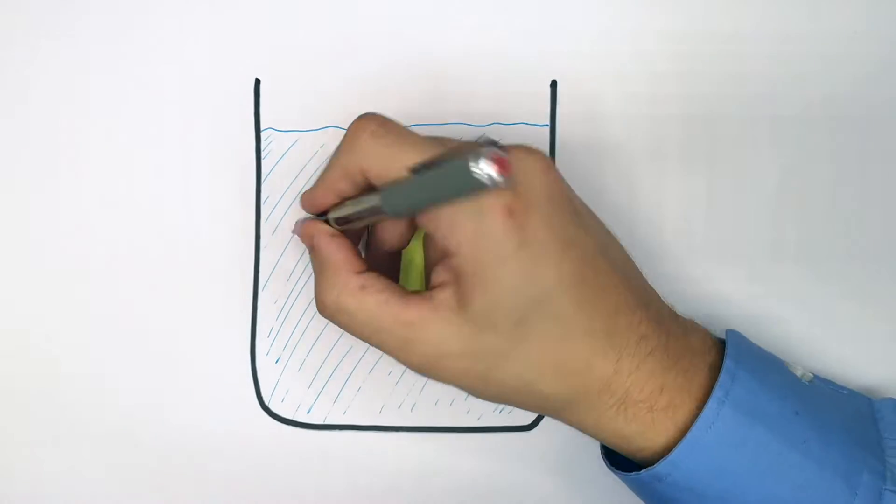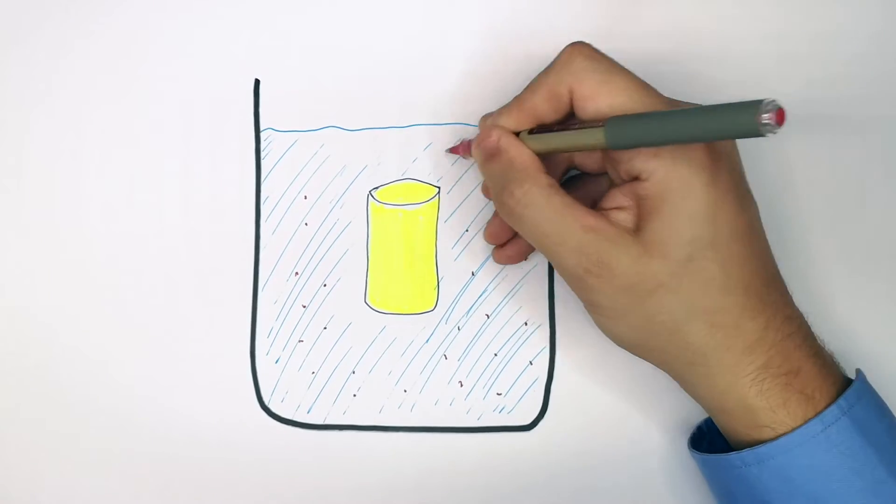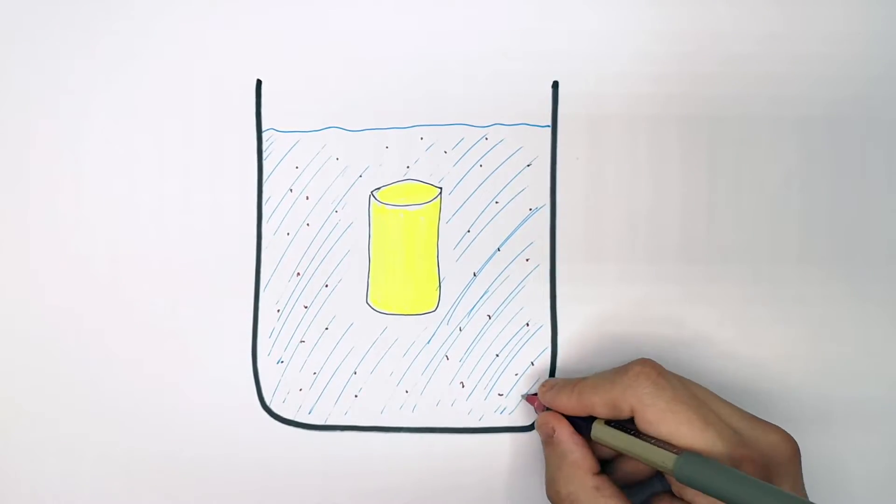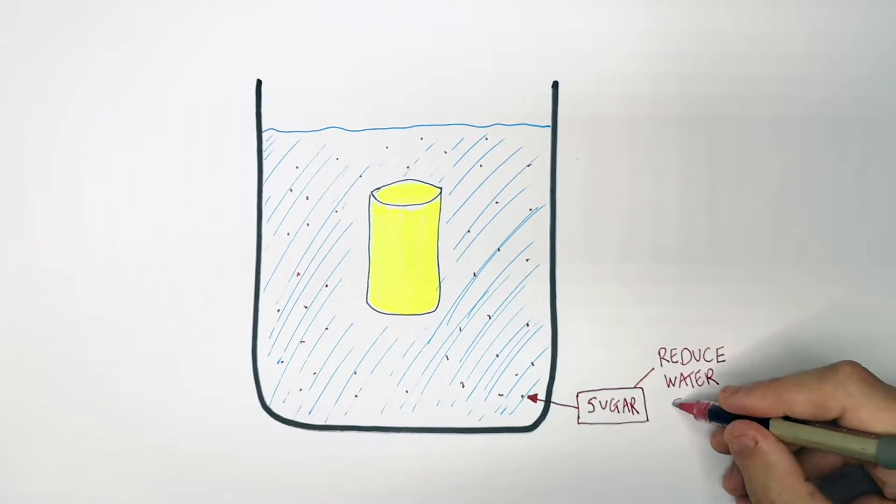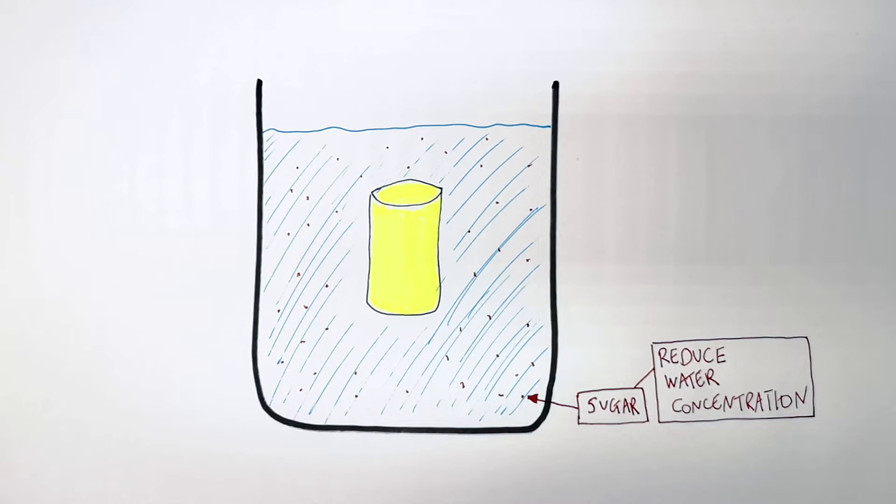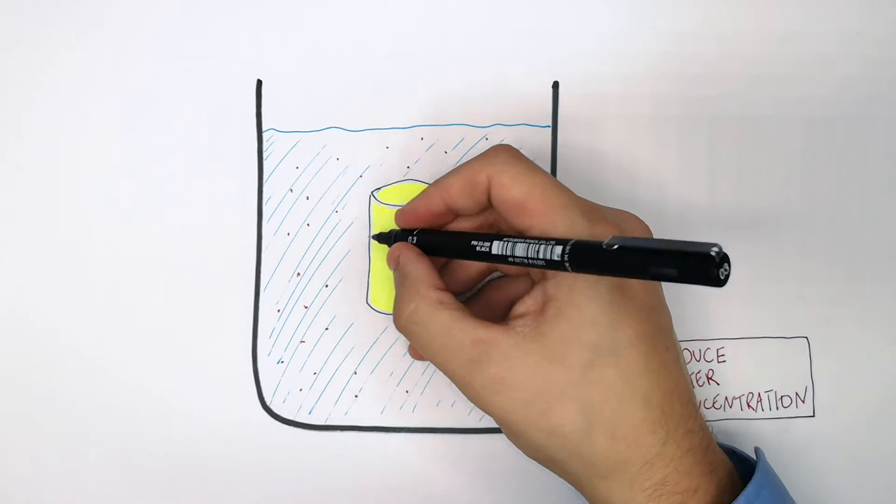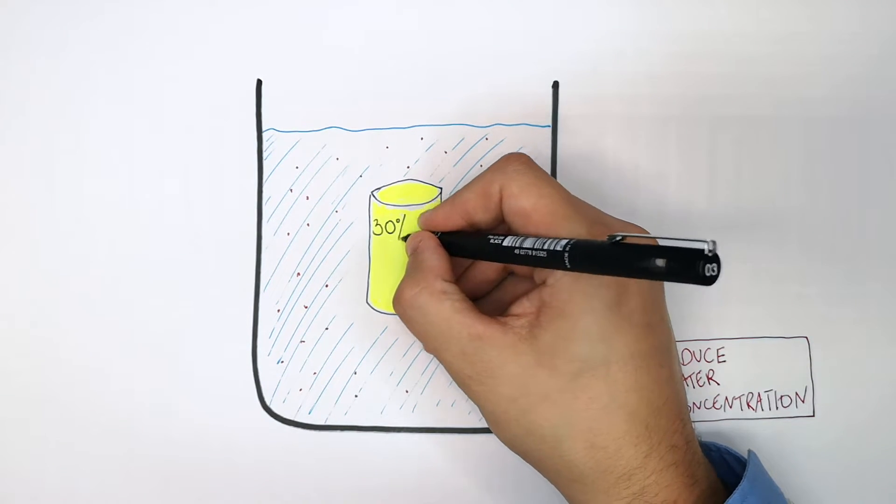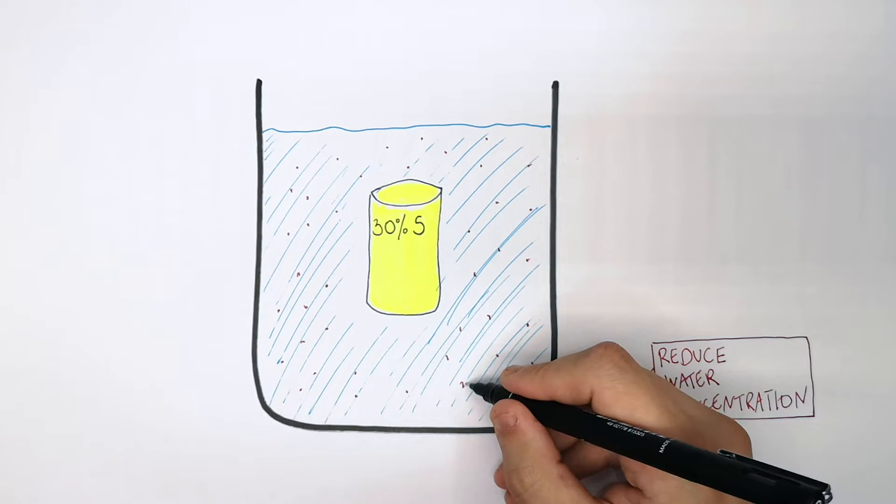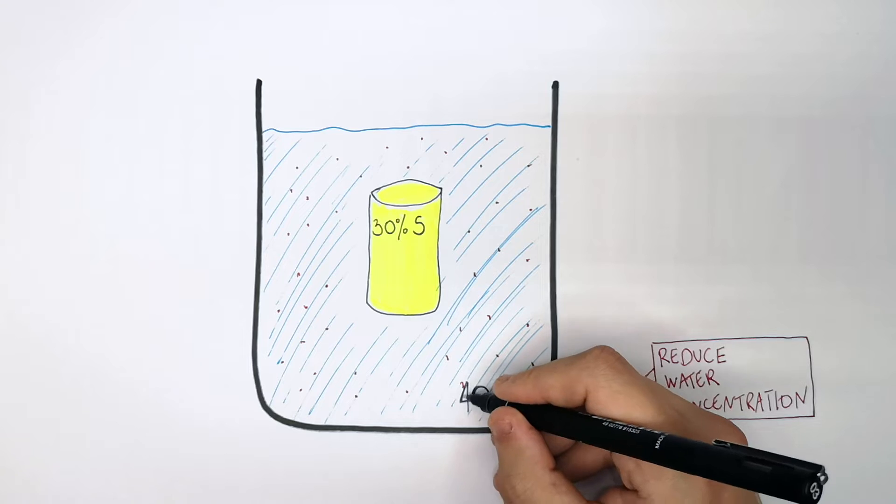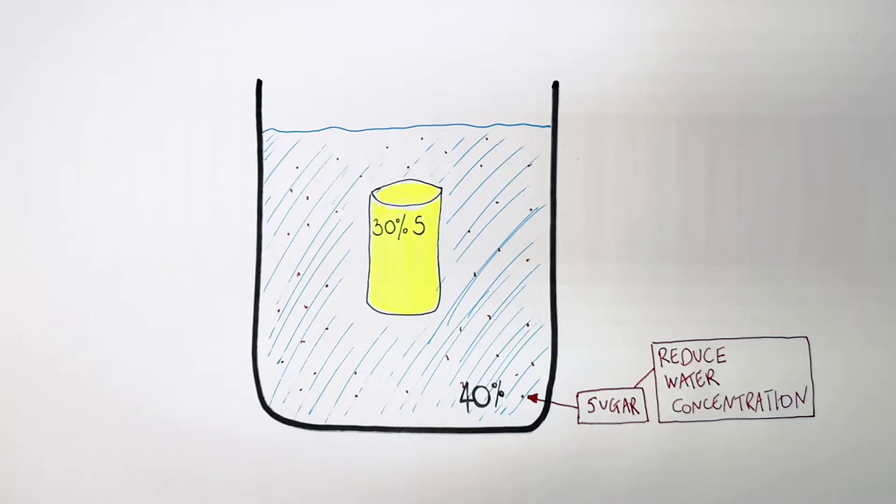So in this example, we're going to add sugar to the beaker of water. So sugar, what that's going to do is it reduces the water concentration. So we're going to keep the potato sugar concentration the same at 30%. And this time, we're going to give the beaker a 40% sugar concentration.